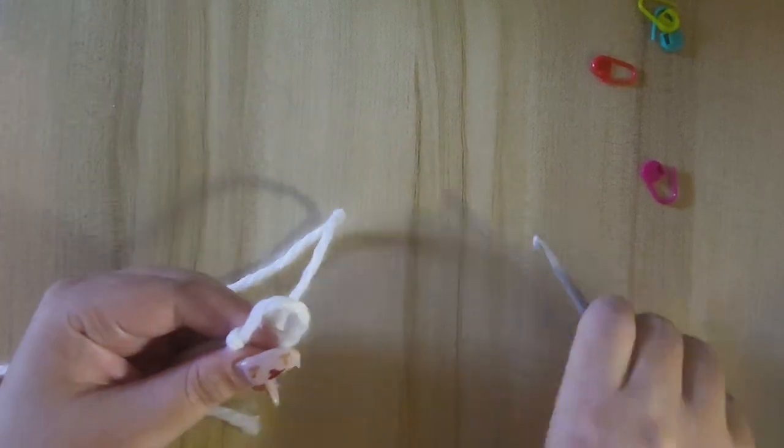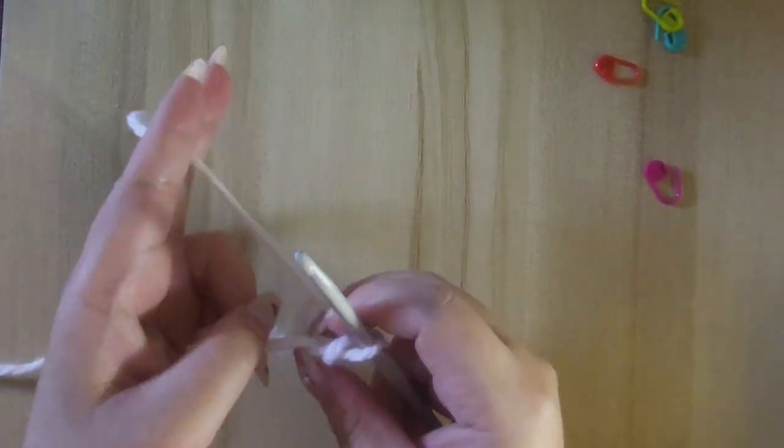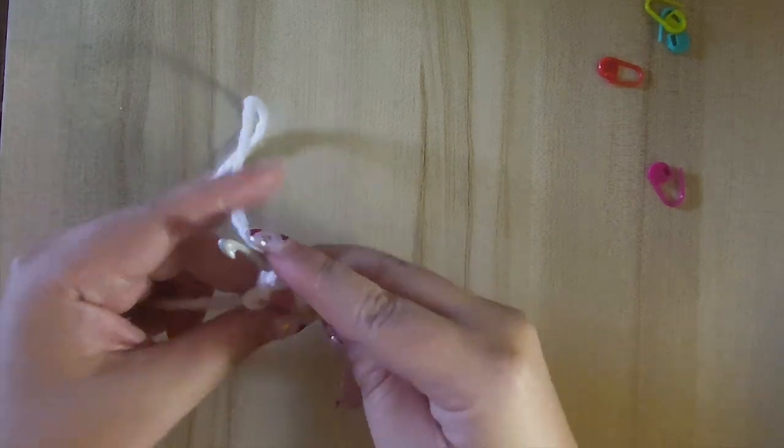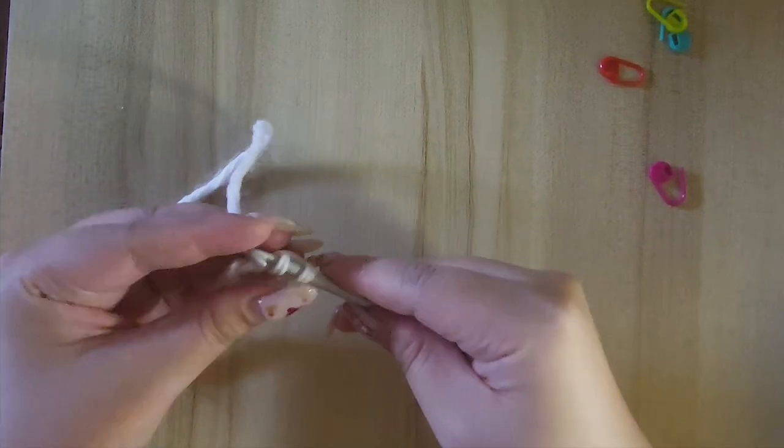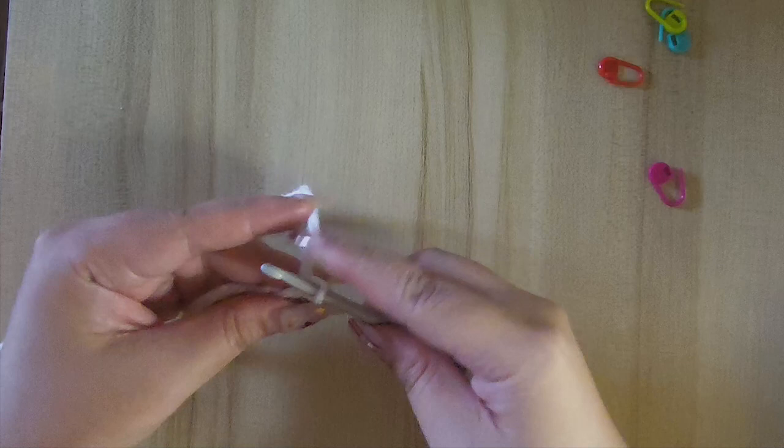Grab the white yarn and let's start by making the top half of the body. For the tutorials check out the link to video 1.